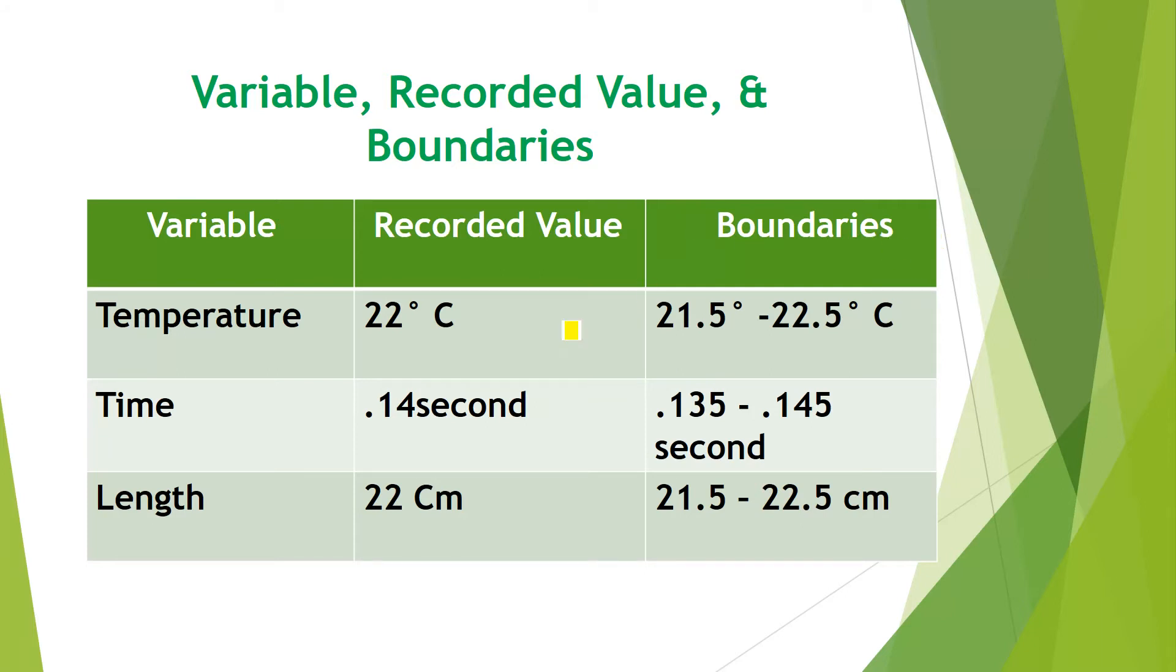If it is a continuous variable, then you have to set the boundaries as well. Suppose, if the temperature is 22.22 degrees centigrade, we have recorded 22 degrees centigrade. Its boundaries are maybe 21.5 up to 22.5 degrees Celsius. If the time is 0.14 seconds, 14 seconds, its boundaries are 0.135 up to 0.145. Suppose if the time is 0.136, you can make it 0.14. If it is 0.137, you can make it 0.14 and it will come under this category. Up to 0.145, but 0.145 is actually not included in this category. If it is 0.145, it will go to the 15th cent.